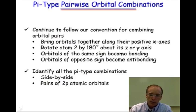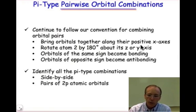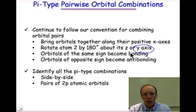The pi-type orbitals are going to be obtained by following our same convention. We're going to try to bring positive x-axes together. We've been rotating about z and we've always found that to be convenient, but in this case we're going to find that sometimes we need to rotate about y in order to get the desired outcome where orbitals that are of the same sign produce a bonding interaction, whereas orbitals of opposite sign produce anti-bonding interactions. We can rotate either about z or about y. We just want to bring the positive x-axes together.